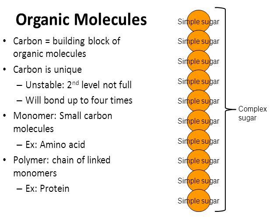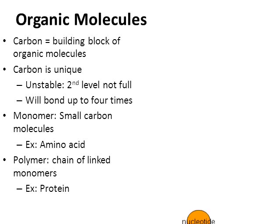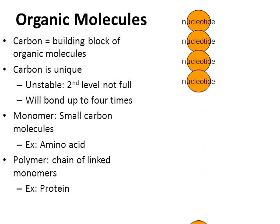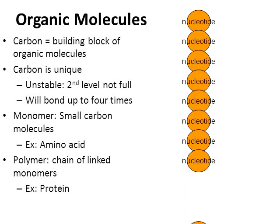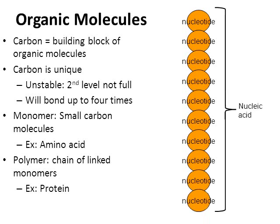There's another type of organic molecule. A whole bunch of nucleotides bond together to make something called a nucleic acid. So nucleic acids are a polymer made up of monomers called nucleotides. DNA and RNA are nucleic acids made from nucleotides.